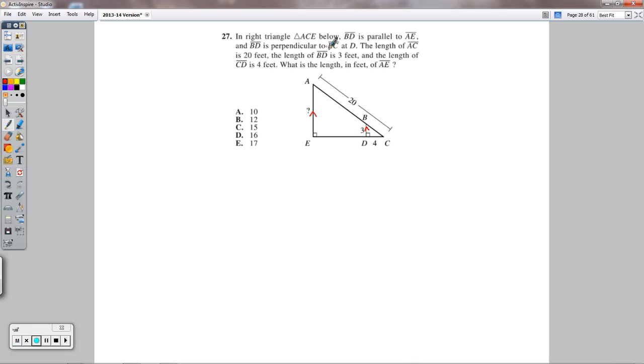BD is perpendicular to EC at D. The length of AC is 20 feet, that's labeled right here. The length of BD is 3, labeled right there. And the length of CD is 4, labeled right there. What is the length in feet of AE?